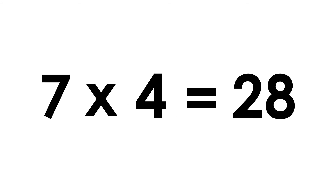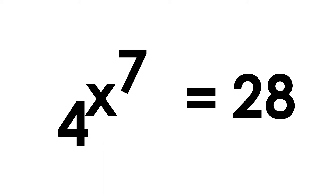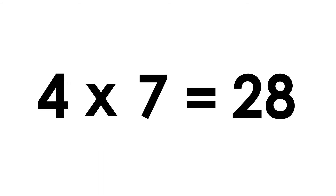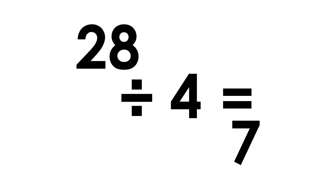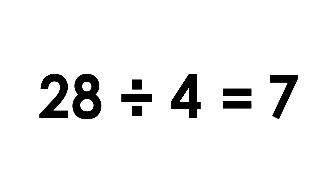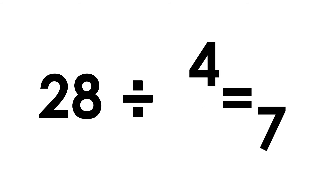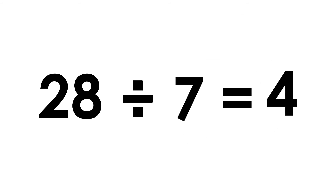Seven fours are twenty eight. Four sevens are twenty eight. Twenty eight divided by four is seven. Twenty eight divided by seven is four.